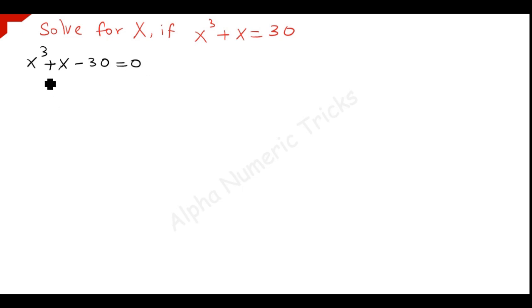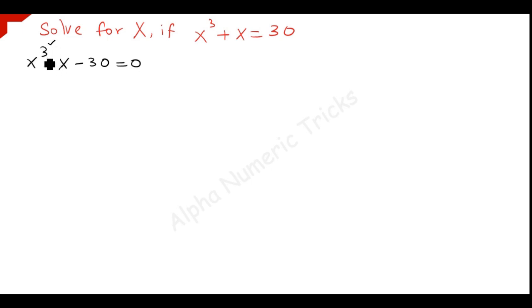Now we have to find out the values for x, that is we have to solve this equation. Here the power of x is equal to 3, so it is a cubic equation. So we must have 3 roots. Since the power of x is equal to 3, we must get 3 roots for this equation. We find them out one by one.